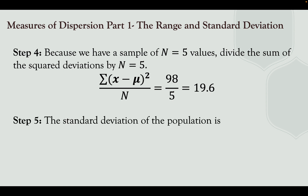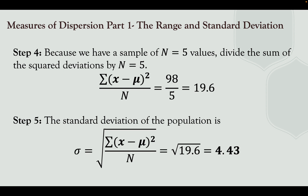In step 5, take the square root of 19.6. The standard deviation of the population is √19.6 ≈ 4.43. Therefore, the standard deviation of the given population data set is 4.43.